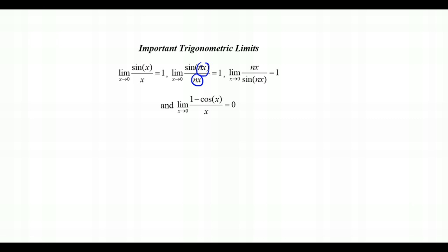This also holds when the numerator and denominator are flipped: the limit as x approaches 0 of nx over sine(nx) also equals 1. A helpful way to remember this: the limit as x approaches 0 of sine(♥) over ♥ equals 1 — it doesn't matter what's there, as long as the same thing appears on both sides.